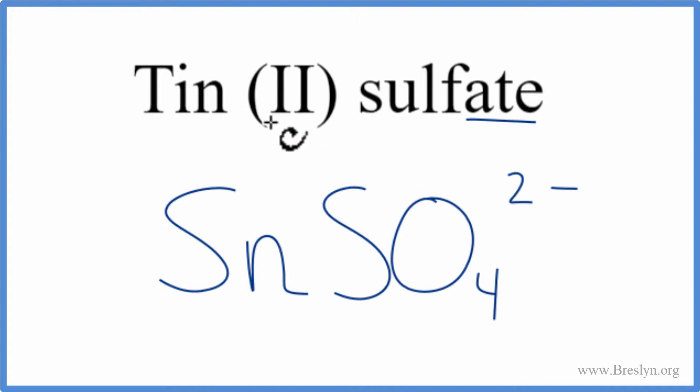Tin(II) tells us it's tin with a 2+ charge. This Roman numeral tells us the charge on the transition metal tin. So that's a 2+, we have a 2- for the sulfate. These add up to zero, a net charge of zero, so that makes this the formula for tin(II) sulfate.